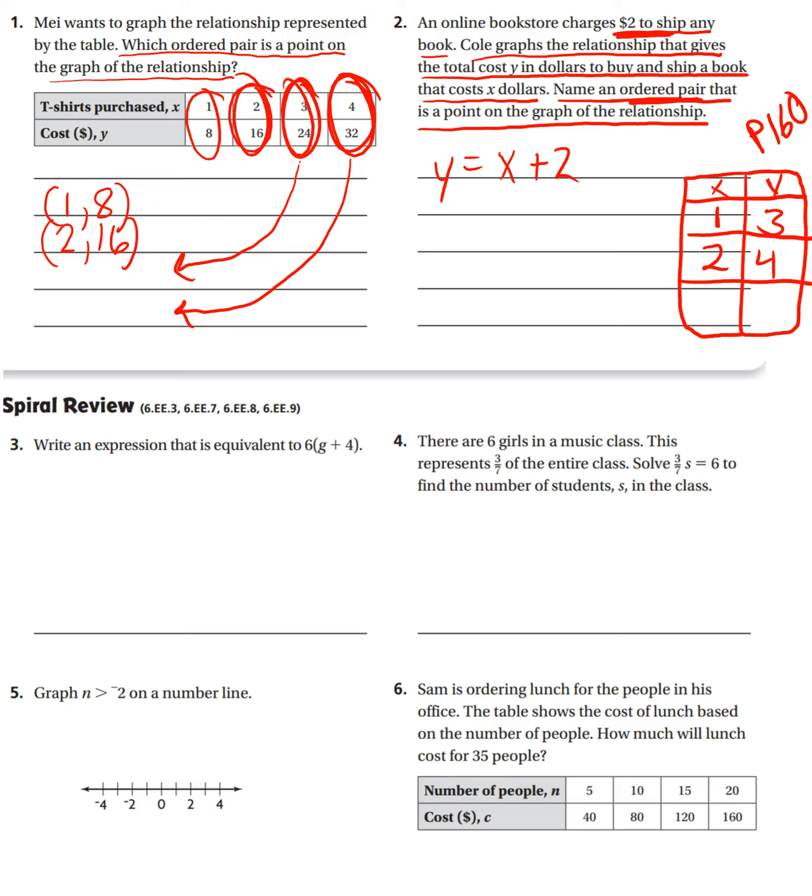But anyways, the point of this problem is they want you to name an ordered pair, any ordered pair. So here's an ordered pair. Here's an ordered pair. And I could come up with more ordered pairs as well. But remember, you want to write these numbers out using your parentheses and comma between. But if you need help, please raise your hand.